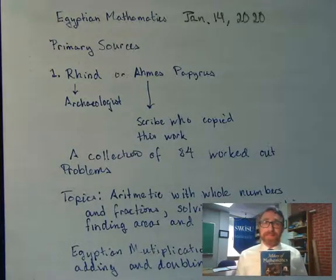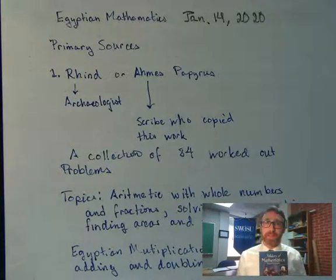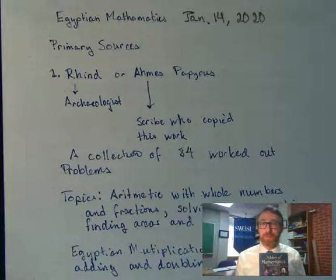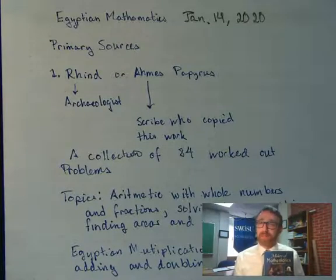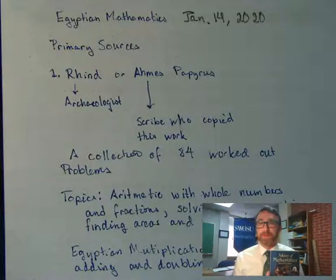We will be following this textbook, Makers of Mathematics by Stuart Hollingdale. It is available on Amazon.com. You can also get it on your Kindle. The version that Amazon is offering right now has a slightly different cover, but don't worry about that. It's the same book on the inside.